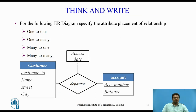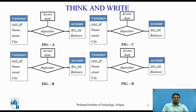Now, pause the video and answer the following question. For the following entity relationship diagram, specify the attribute placement of relationship one-to-one, one-to-many, many-to-one, and many-to-many. The answer is: attributes of one-to-one relationship sets can be associated with one of the participating entity sets rather than with the relationship set — as shown in figure A, access date can be repositioned with either customer or account entity. Attributes of many-to-one or one-to-many relationship sets can be associated with the many-side — as shown in figure B, for many-to-one, access date can be repositioned to the customer entity, and as shown in figure C, for one-to-many, access date can be repositioned to the account entity. For many-to-many relationship sets, attributes must be associated with the relationship set rather than one of the participating entities — as shown in figure D, access date must be associated with the depositor relationship.